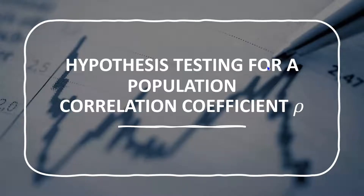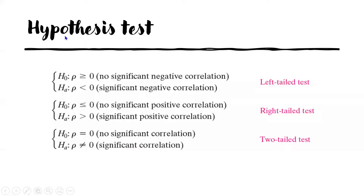Let's talk about hypothesis testing for a population correlation coefficient. We will use the left-tail test, the right-tail test, and the two-tail test. You use the left-tail test if the alternative hypothesis has a less-than symbol, the right-tail test if it has a greater-than symbol, and the two-tail test if the alternative hypothesis is not equal.